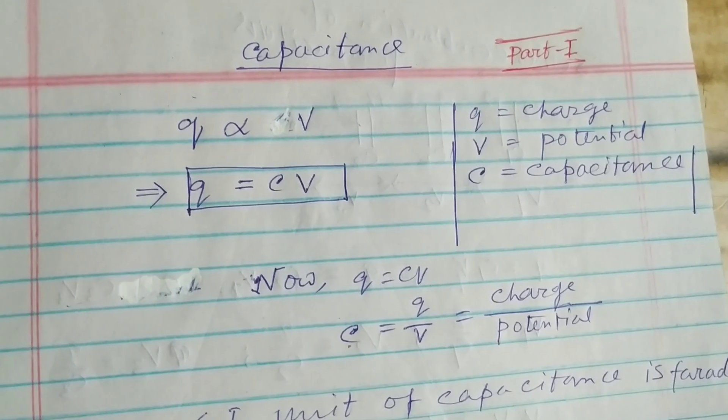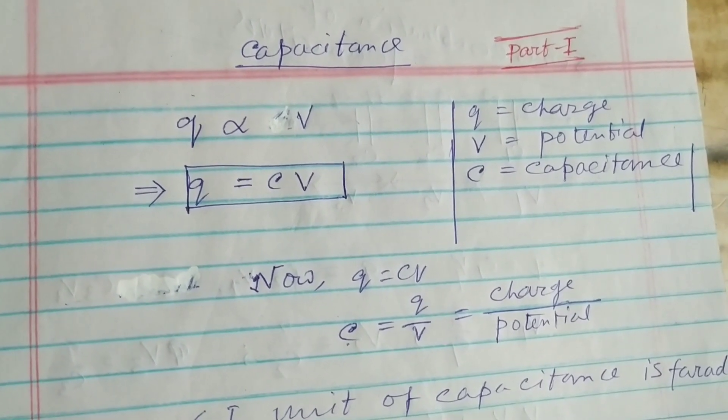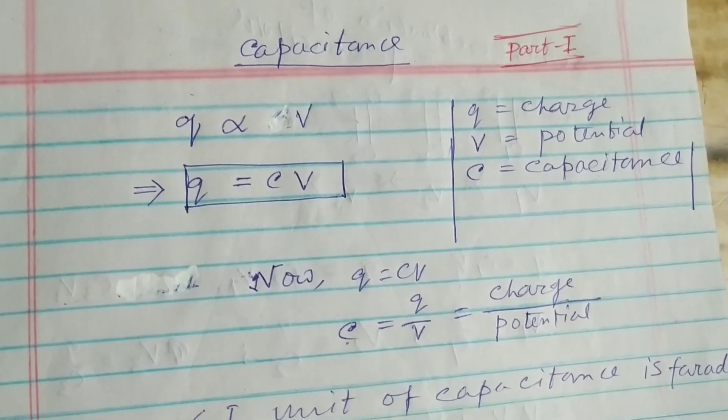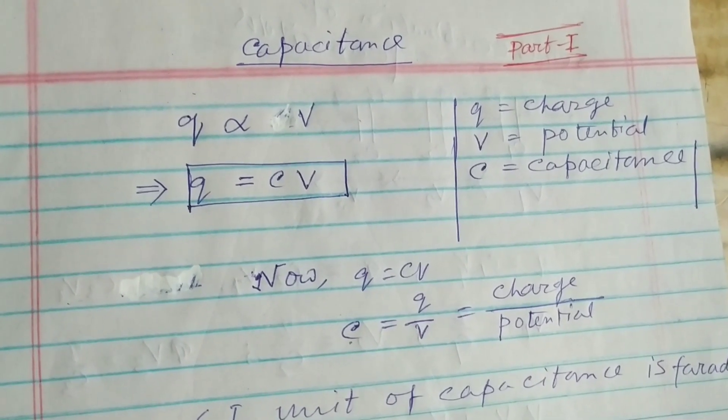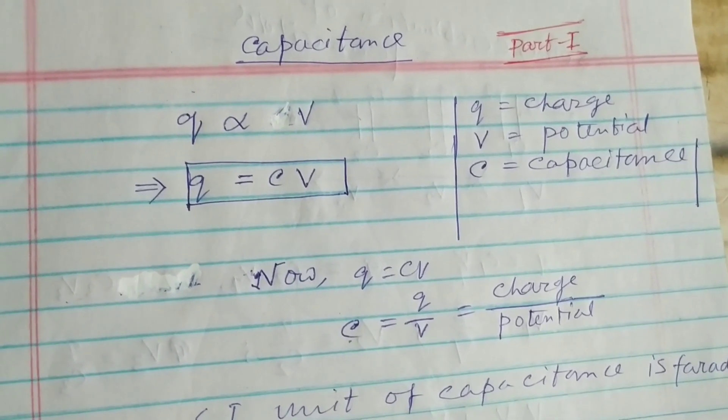Capacitor is the machine which can hold the charge, and capacitance is the property of how much charge the capacitor can hold.